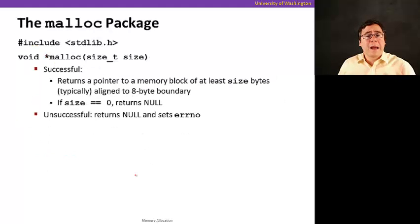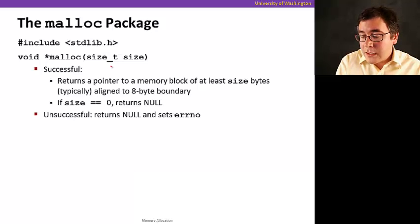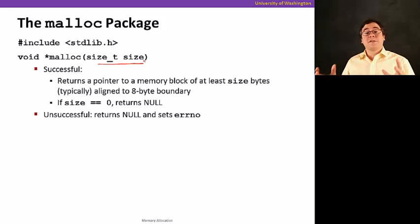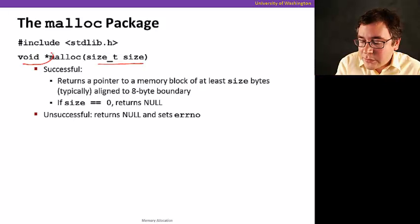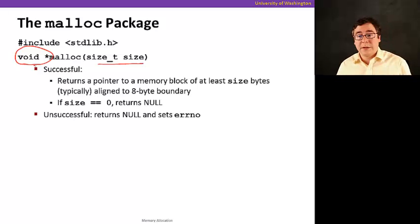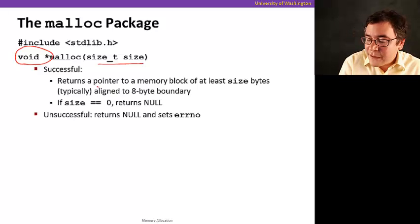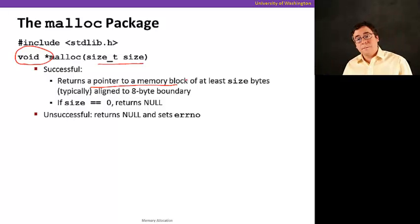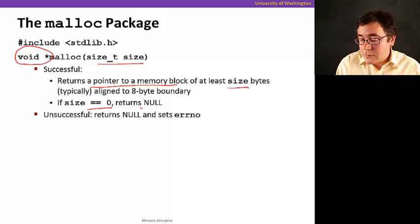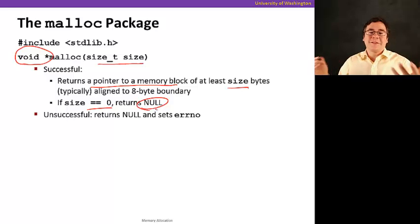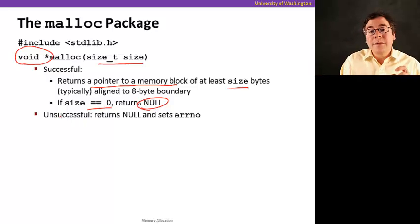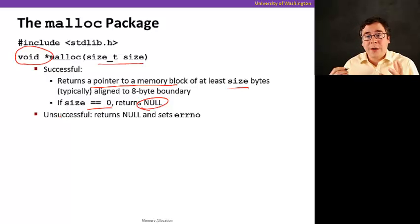So we're going to be looking at the malloc package. This is part of the standard C library. And here's what malloc does. Malloc receives a size as a parameter. That's the size of the block that's going to be allocated. And it returns a pointer that doesn't have a type, because we don't know what kind of data is going to be there. So if it's successful, it returns a pointer to the new memory block that has at least size bytes. And if the size is equal to zero, it returns null. Because then why are you allocating if the size is zero, right? And if malloc cannot find enough free memory to allocate the requested block, it returns null and sets an error number.